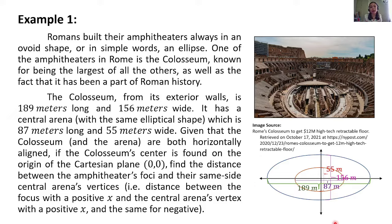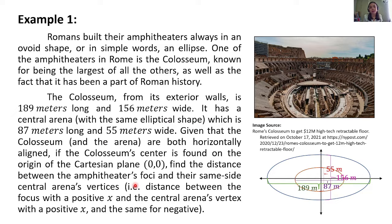Kapag nagsasolve tayo ng situational problems involving conic sections, kailangan natin balikan yung previous lessons natin, kasi may i-apply natin yun sa pag-solve ng problems natin. If the Colosseum's center is found on the origin of the Cartesian plane, yung coordinates niya is 0,0 — binigay na rin sa atin na yung center ng Colosseum ay at point 0,0. So yung mga data na binigay sa atin, we'll be using that in solving to find what is asked in our problem.